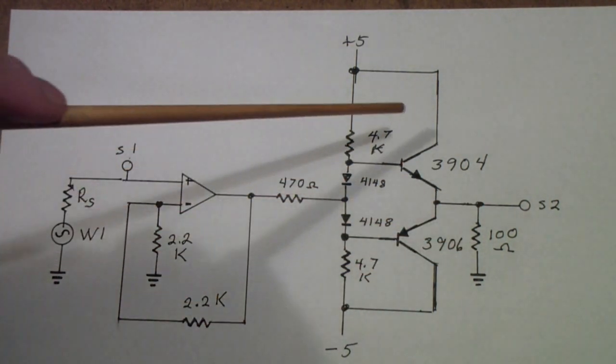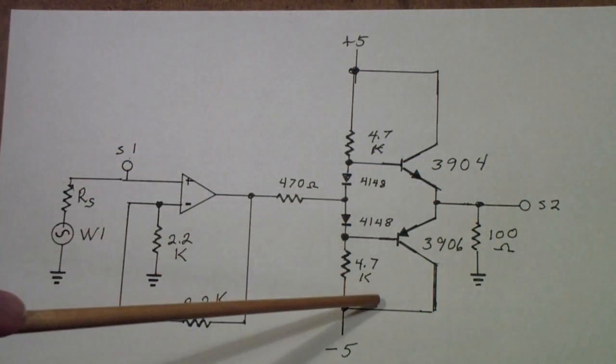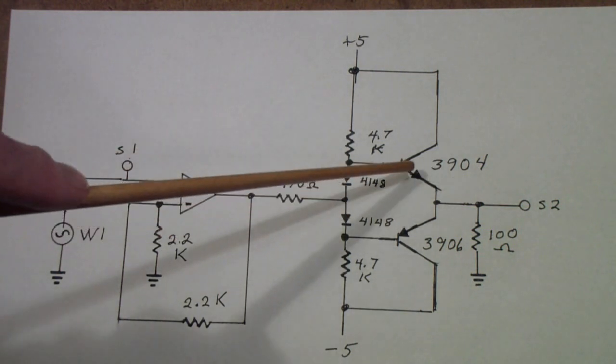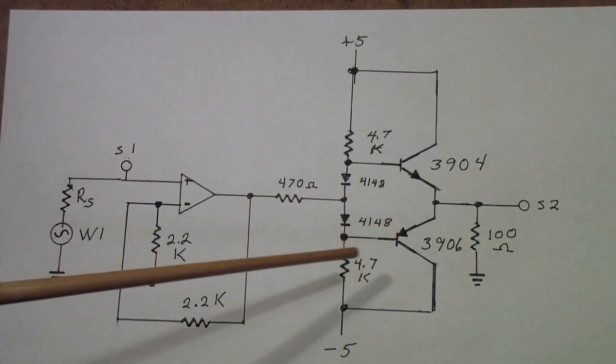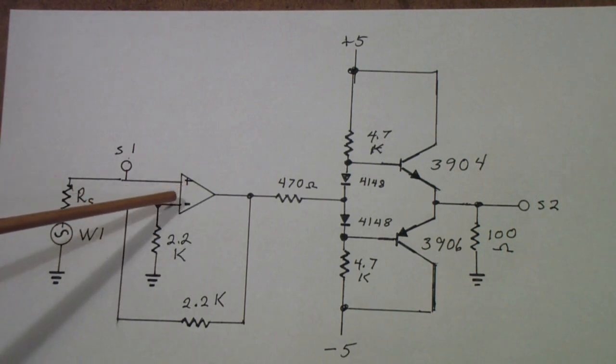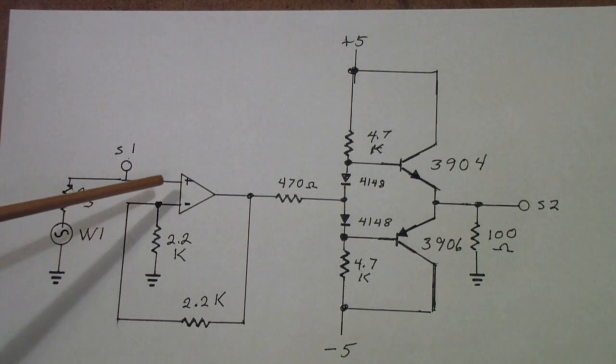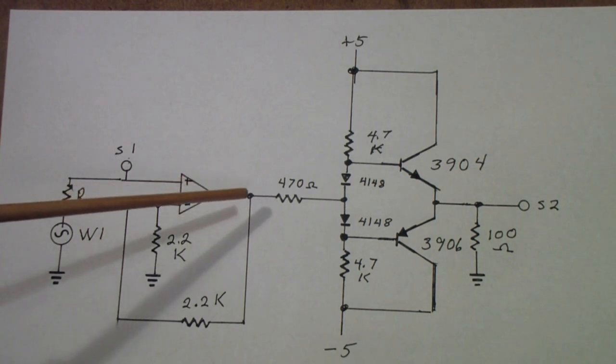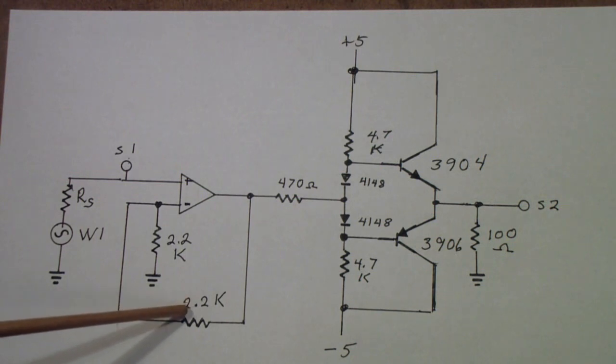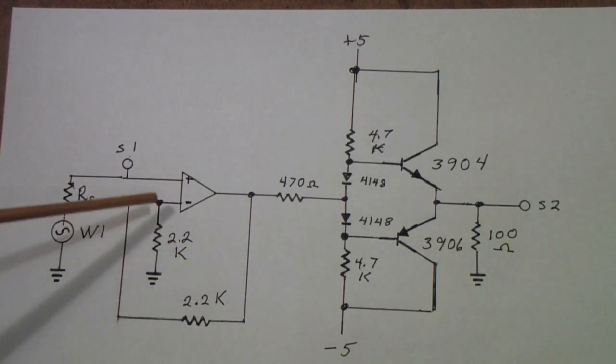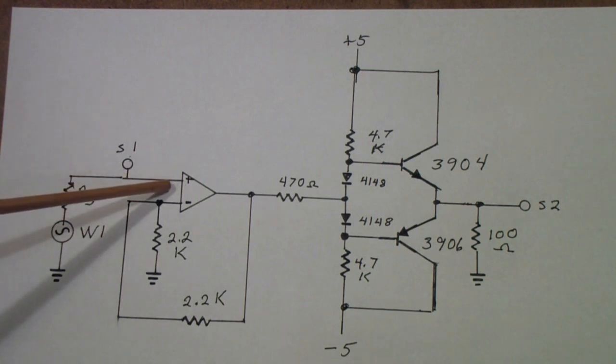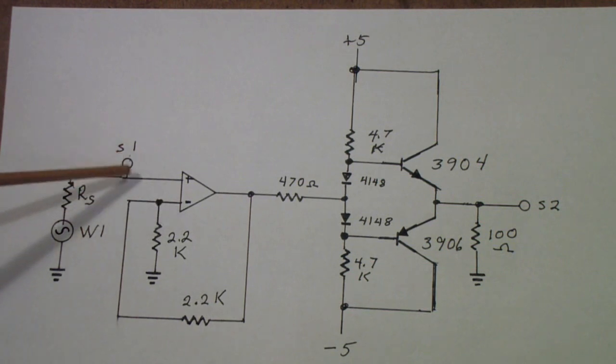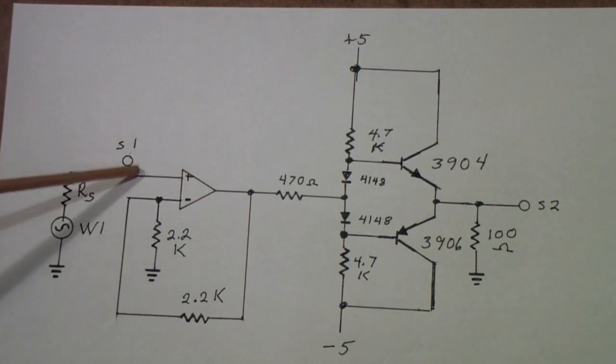In a hi-fi amp this would normally be the speaker, an 8 ohm load or 4 ohm load or something like that. I'm just using 100 ohms here to keep the power dissipation down. On the left is an operational amplifier, actually a 741 that I'm using. It's really just intended to provide higher input impedance and to give a gain of about two.